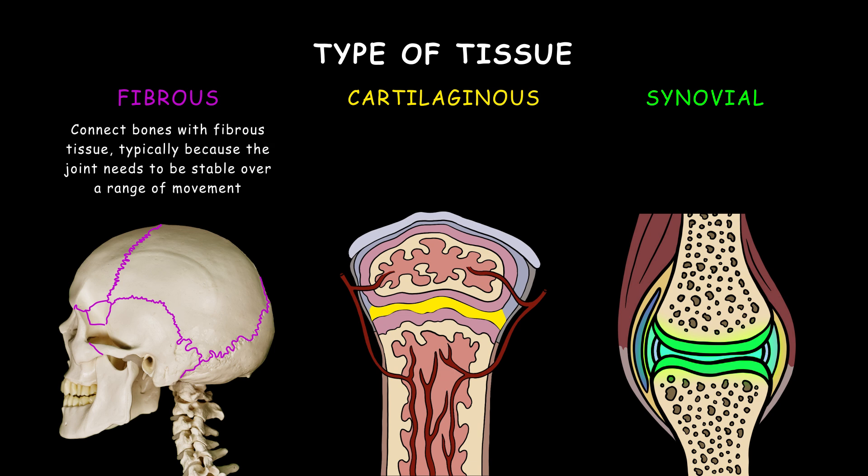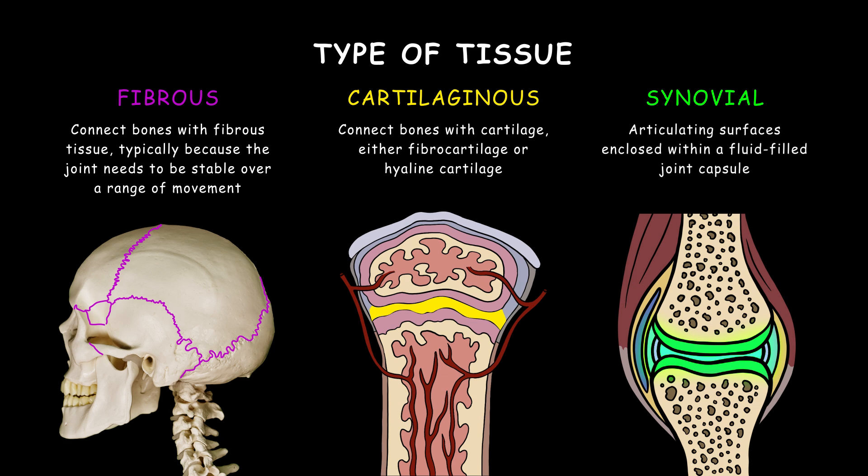Fibrous joints connect bones with fibrous tissue, typically because the joint needs to be stable over a range of movement. Cartilaginous joints connect bones with cartilage, either fibrocartilage or hyaline cartilage. Finally, synovial joints are articulating surfaces enclosed within a fluid-filled joint capsule.